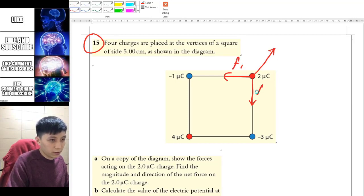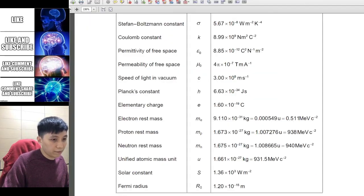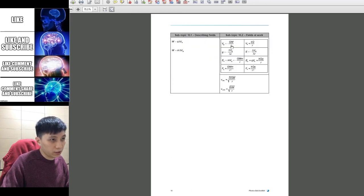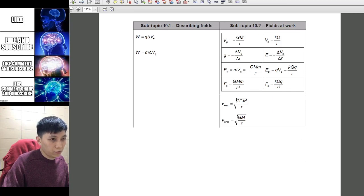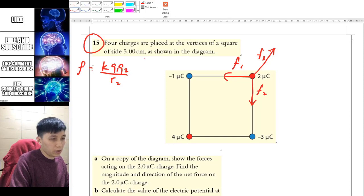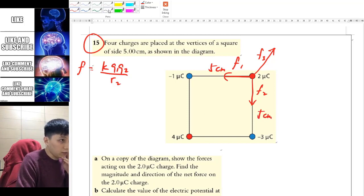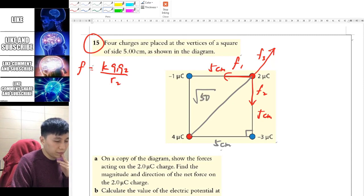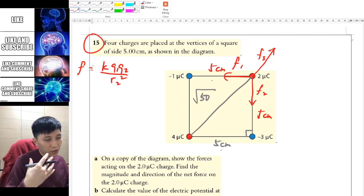Let me name them F1, F2, and F3. For every force, it's just Coulomb's law: F equals kq1q2 over r squared. The only tricky thing is you have 5 cm for the side of the square. The distance between opposite corners is root 50 using Pythagoras theorem. Substitute everything and consider the trigonometry with sine and cosine.